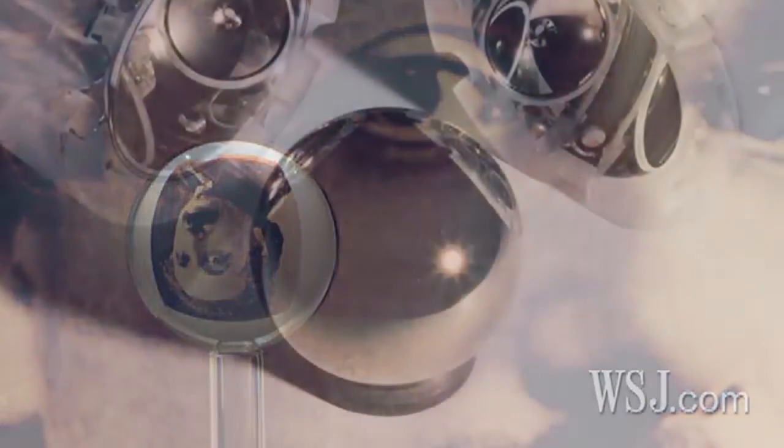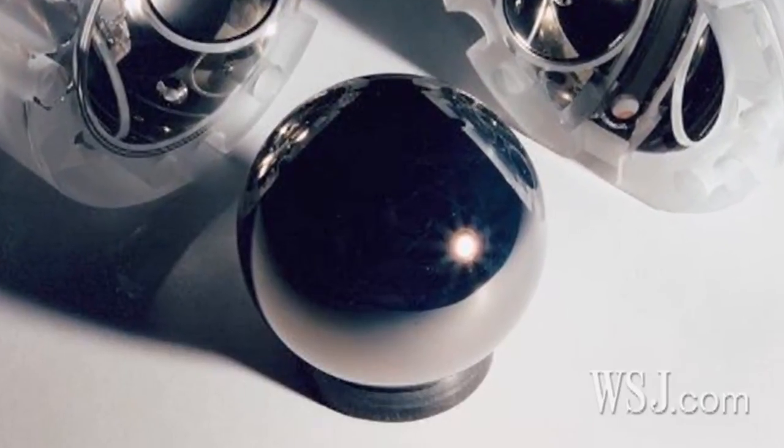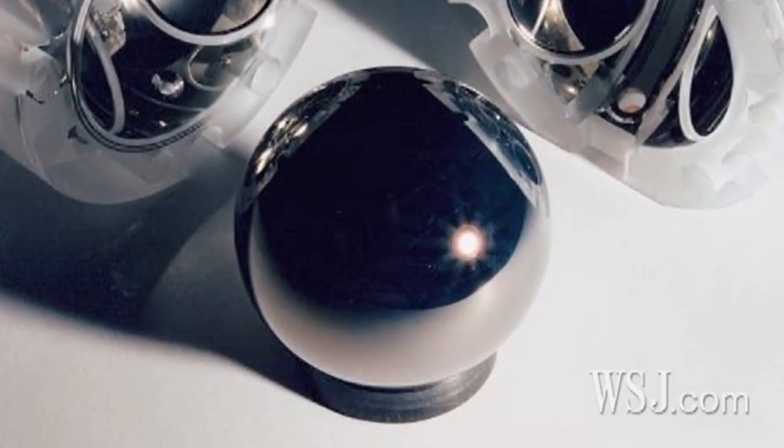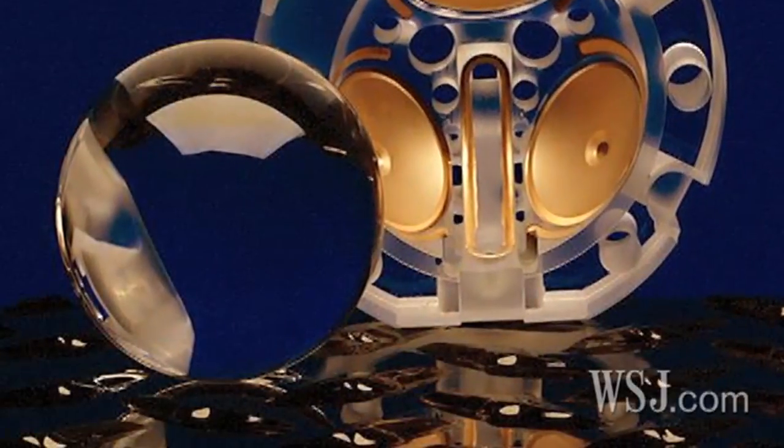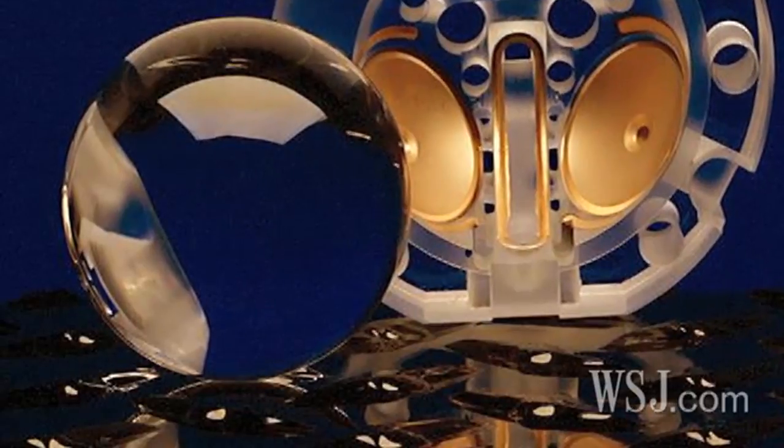To measure relativity's effects, the researchers devised four of the most precise gyroscopes ever made. Each one was a spinning, super-chilled sphere of quartz crystal about the size of a ping-pong ball and polished to within 40 atomic layers of a perfect sphere.